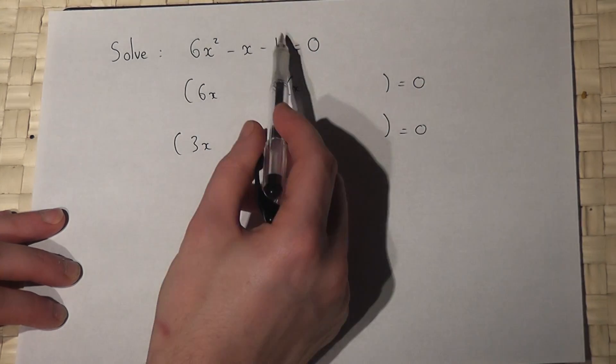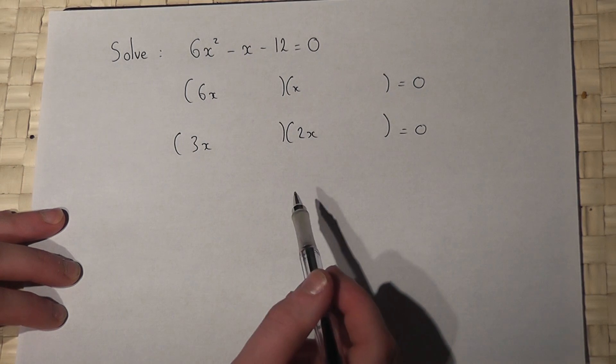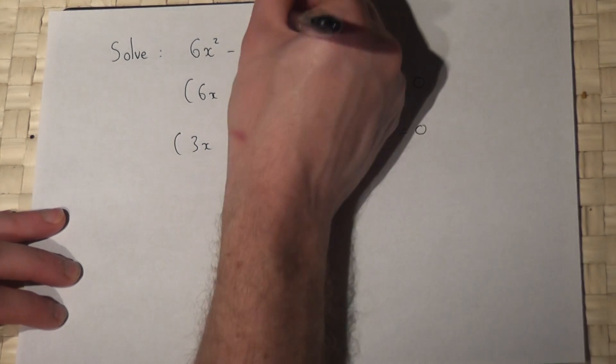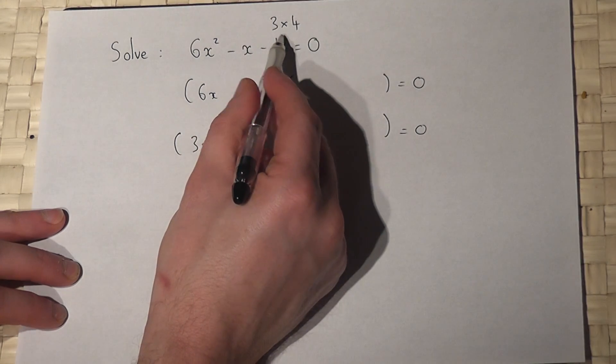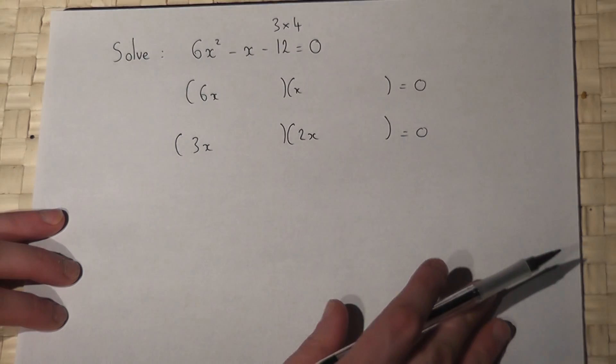Now, we have 12, and the obvious factors of 12 are 3×4, but to get negative 12, one of those must be negative. So it could be negative 3 and 4, or negative 4 times 3.